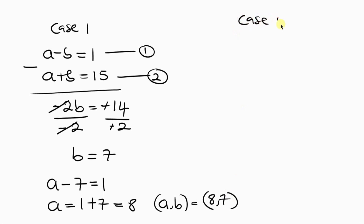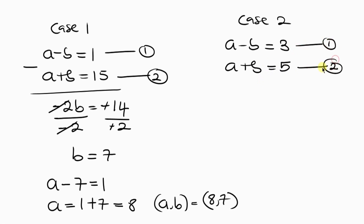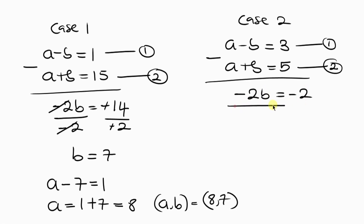For Case 2, A minus B equals 3 (equation 1) and A plus B equals 5 (equation 2). Subtracting gives minus 2B equals 3 minus 5, that's minus 2. Dividing both sides by negative 2, we get B equals 1.